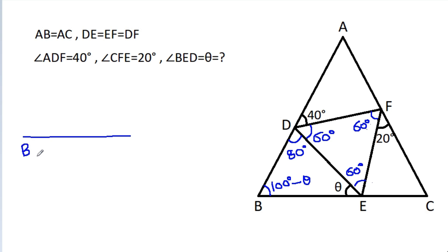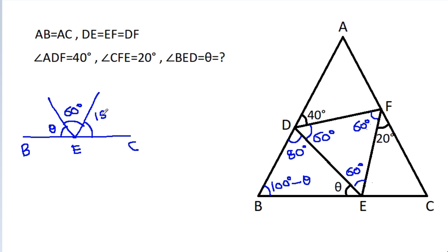Now we have triangle BCE. This angle is theta and this angle is 60 degrees, so the remaining angle will be 180 degrees minus theta minus 60 degrees, which equals 120 degrees minus theta. So this angle is 120 degrees minus theta.